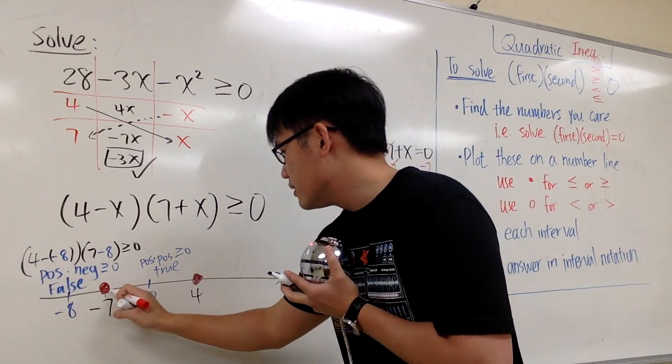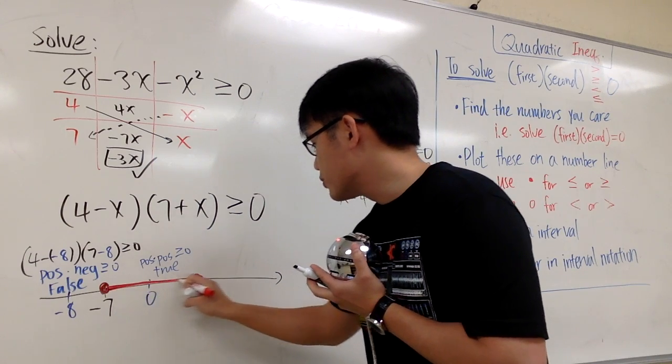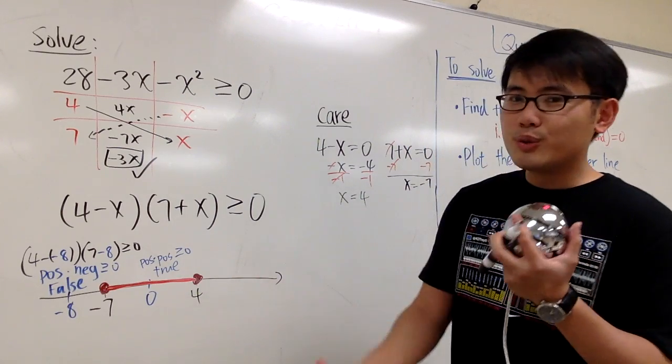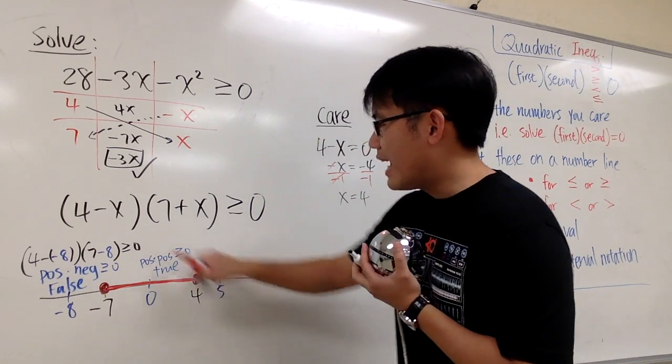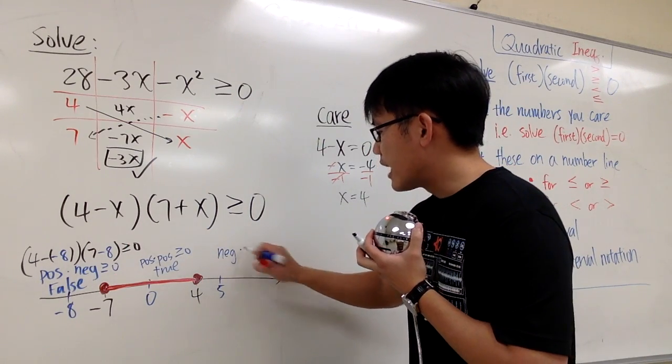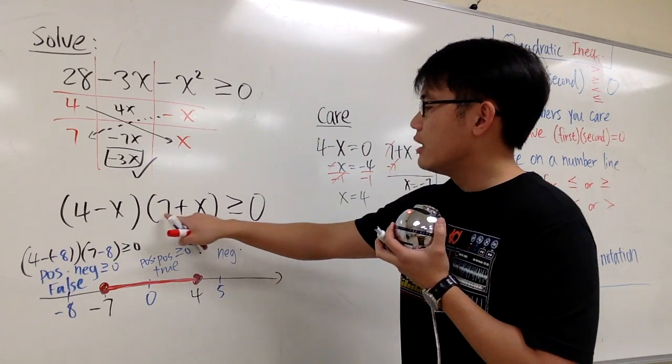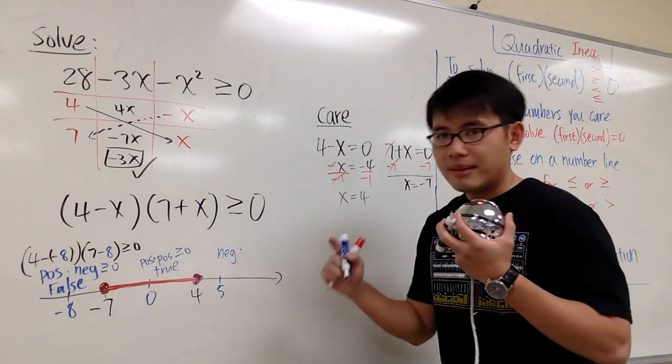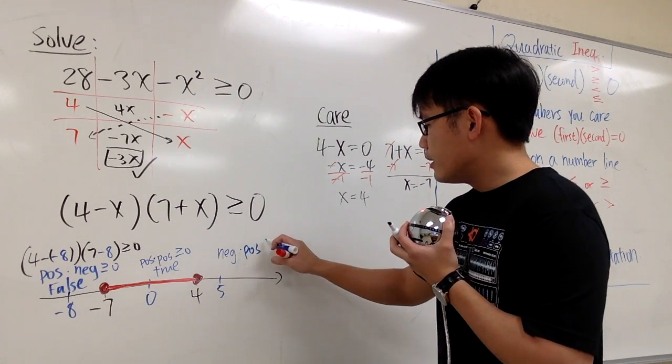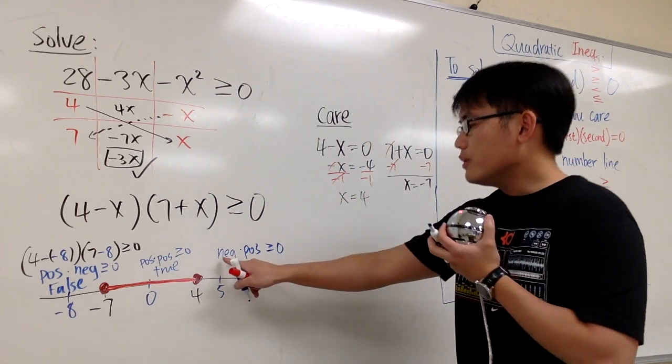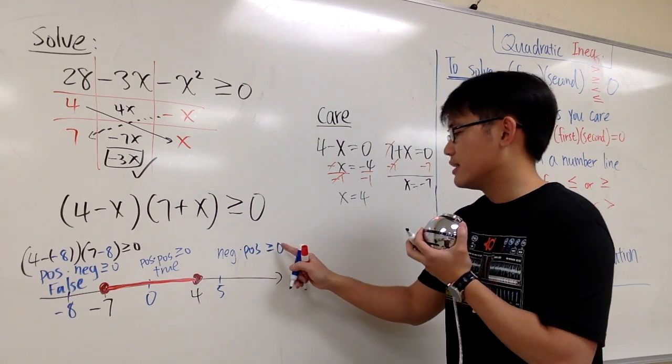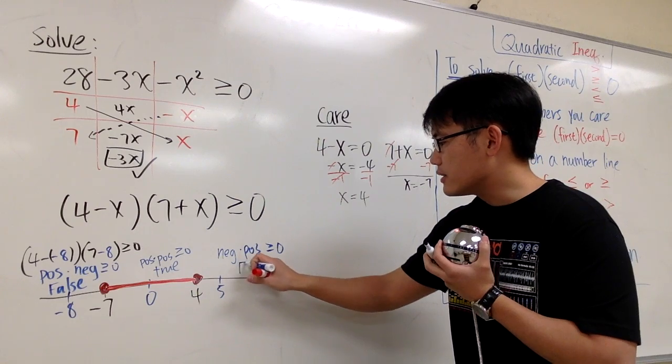And we are going to color in the true intervals. And for the third part, I'm just going to pick a number bigger than 4. We are going to use 5. So plug in 5 into here. 4 minus 5 is negative 1. Plug in 5 into this x: 7 plus 5 is 12, positive 12. And is this greater than or equal to 0? Negative times positive, the result of this is negative. A negative number is not greater than or equal to 0. This right here is false.